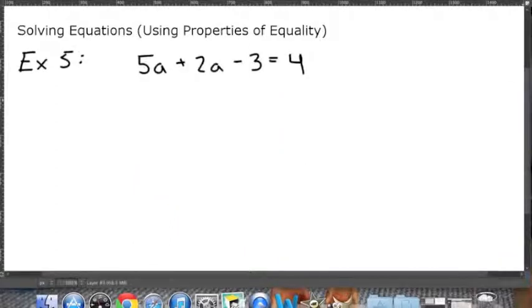Let's look at one final example. In here we have 5a plus 2a minus 3 equals 4. Our first step will be to simplify this. We have two variables but both variables are the same so we can combine like terms like we did in our previous video. 5a can be combined with 2a so we're going to have 7a because 5 plus 2 is 7 minus 3 equals 4.